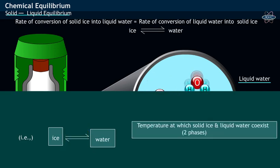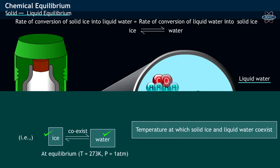The temperature at which two phases, that is solid ice and liquid water, coexist at one atmospheric pressure is called melting point.